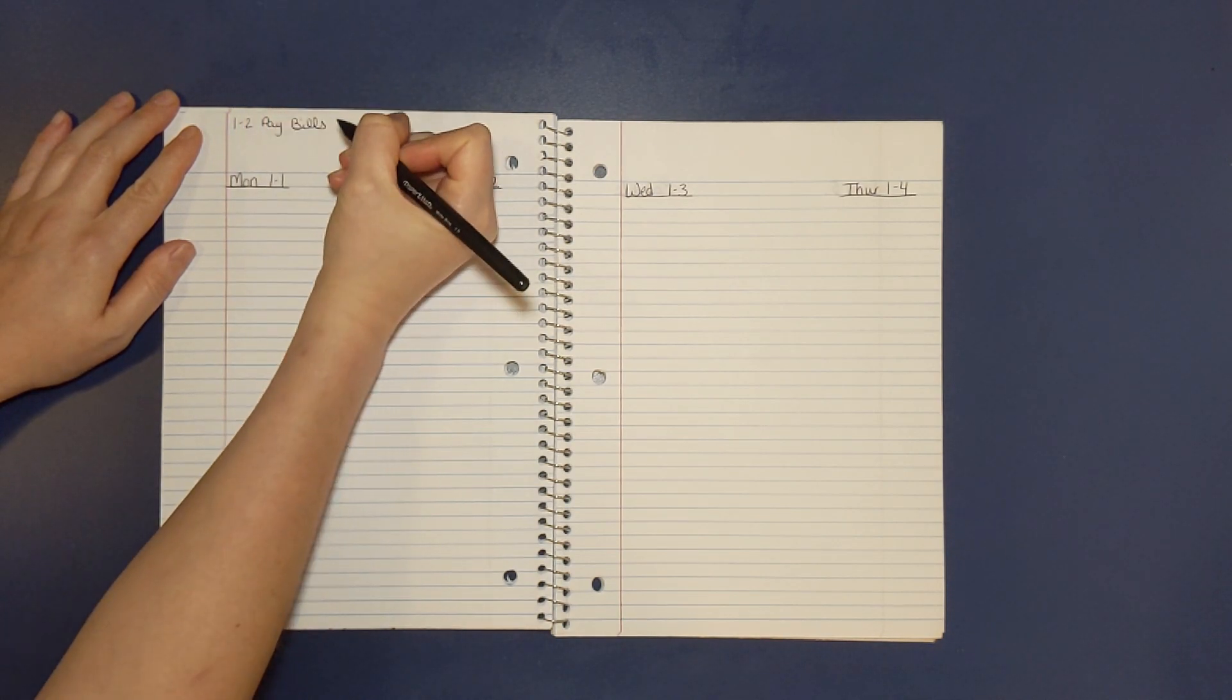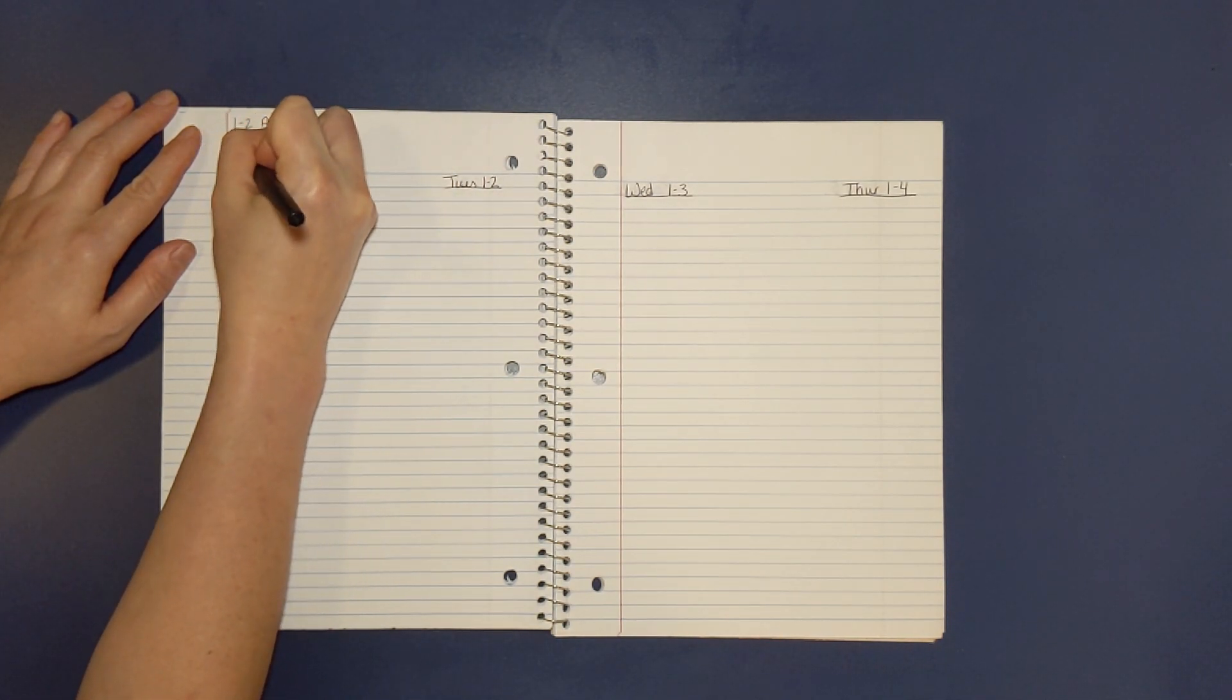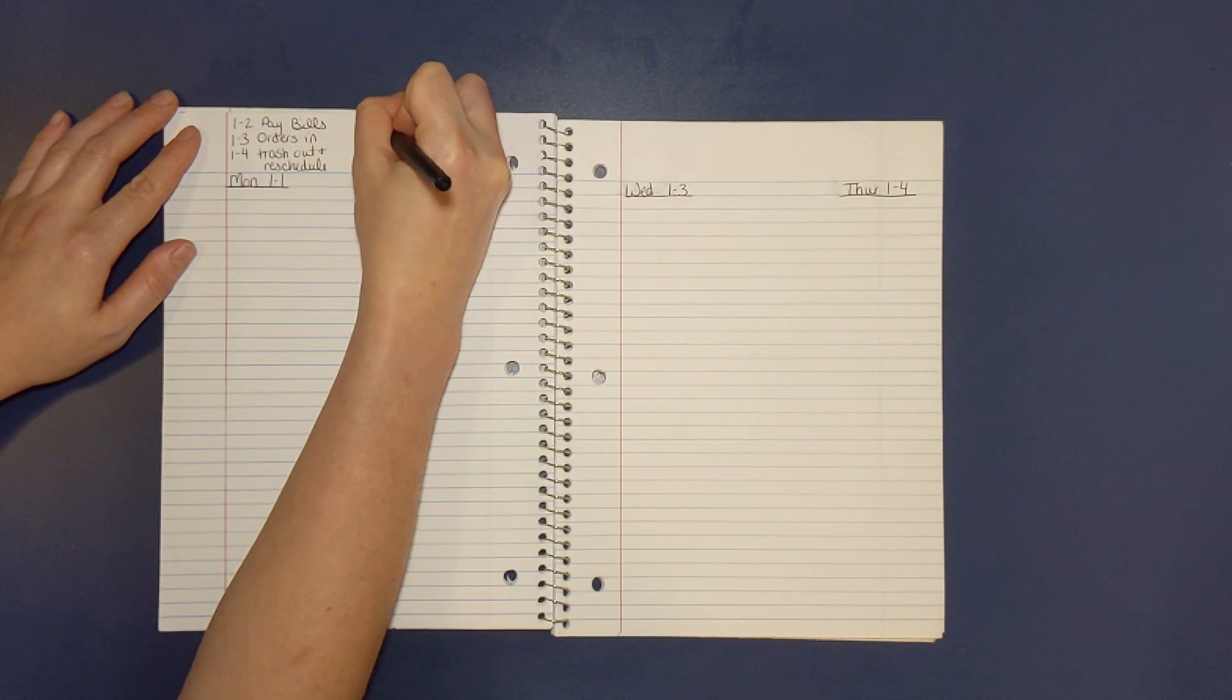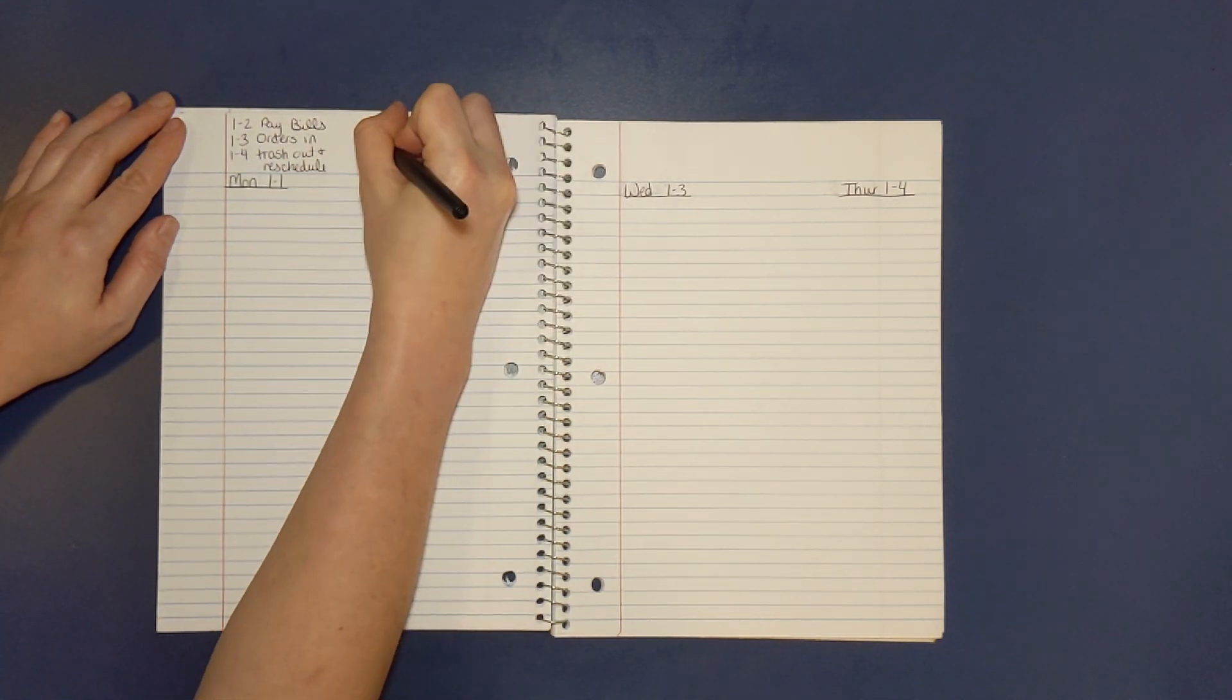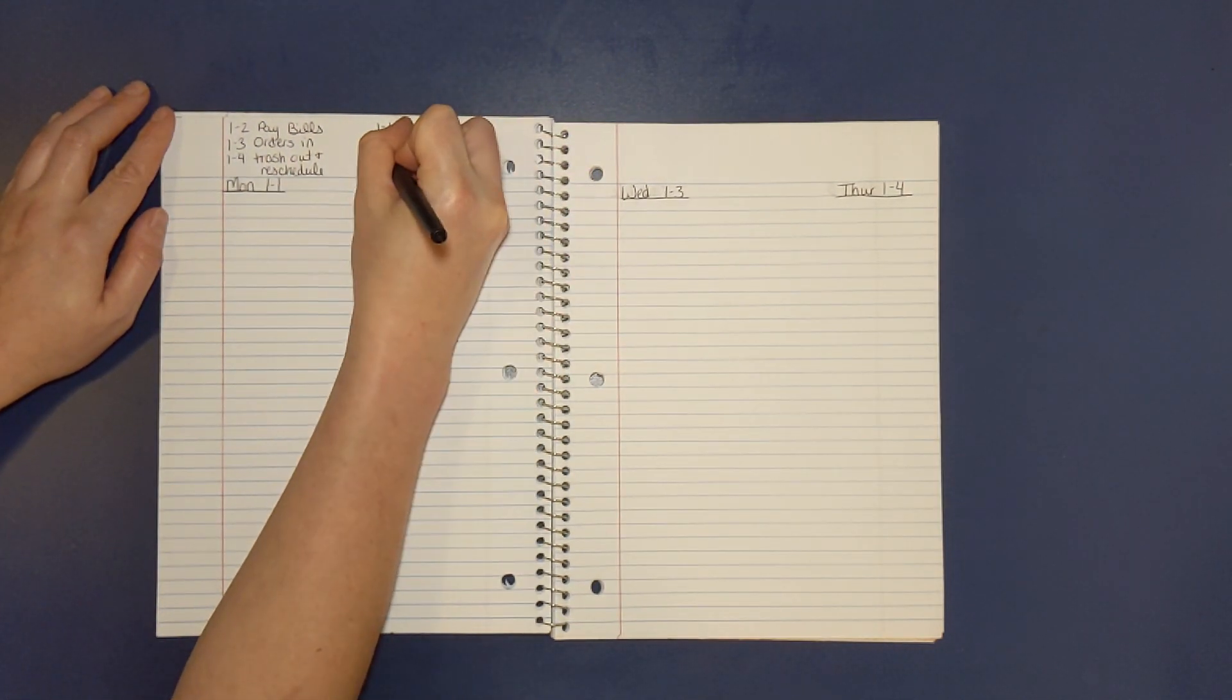To start, I just write all the days of the week, plus my weekly home blessing hour. I'll share more on that later. Then at the top of the first page, I like to write all the dates of things I need to remember for the month.